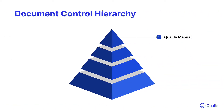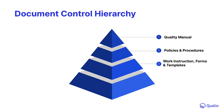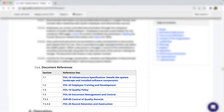Document control is governed by a hierarchy starting with a quality manual. The quality manual should clearly communicate to employees and auditors, at a high level, the framework of policies and procedures that dictate how your organization is run and meets quality requirements. Those individual policy and procedure documents then describe work instruction documents and forms and templates that should be used to fulfill the policy and procedure requirements and steps.